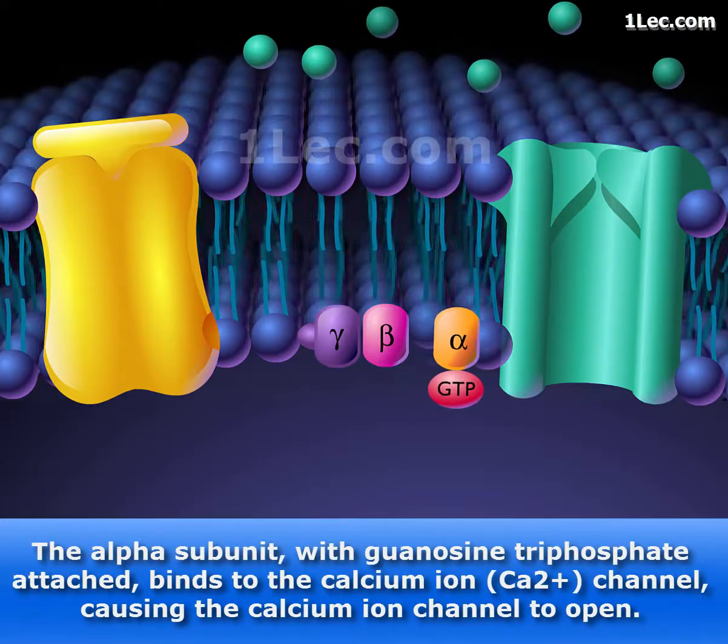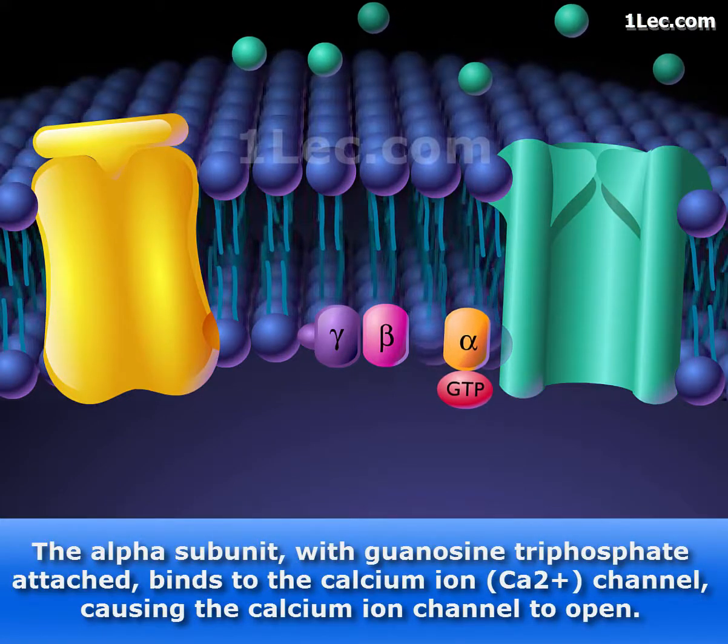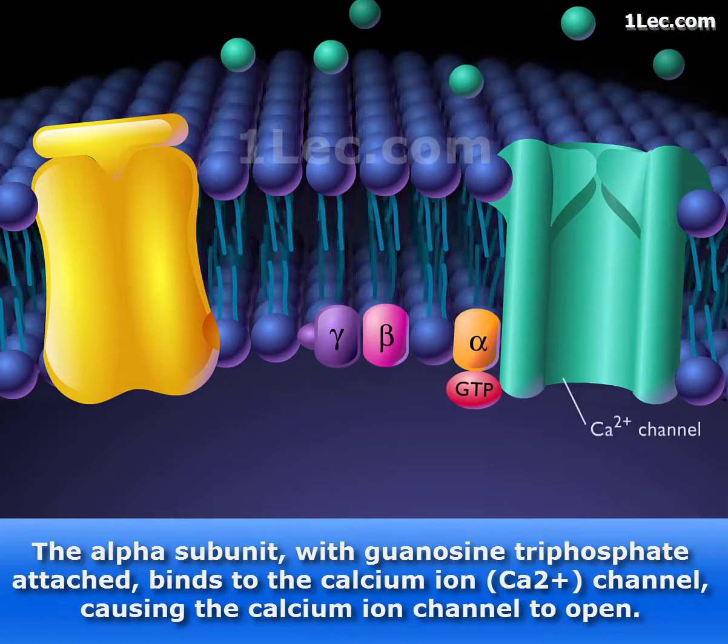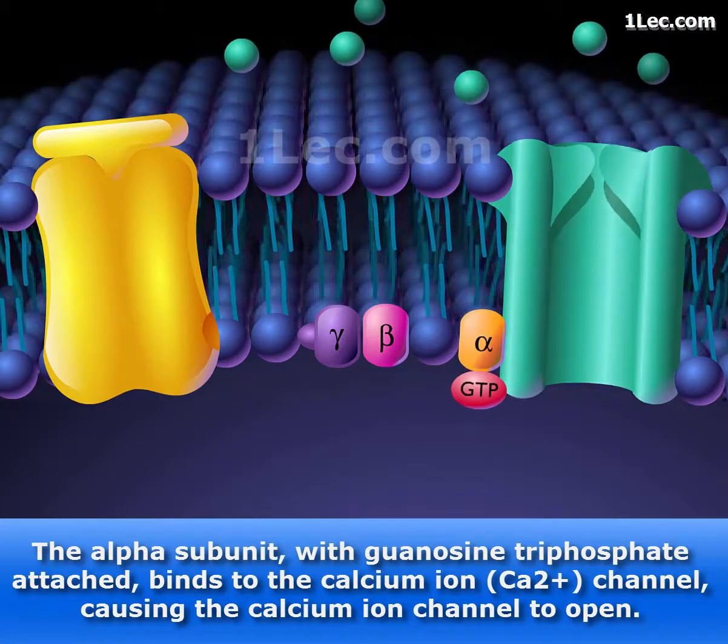The alpha subunit, with guanosine triphosphate attached, binds to the calcium ion channel, causing the calcium ion channel to open.